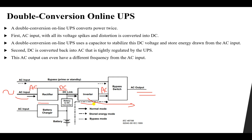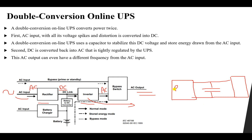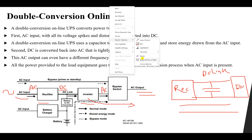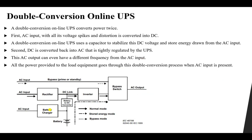You will see this configuration a lot in electrical power systems — it is called the back-to-back converters. A rectifier is connected to a DC link, and that DC link is connected to an inverter. This same configuration is used in the UPS. All the power provided to the load equipment goes through this double conversion process when we have an AC input.